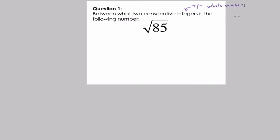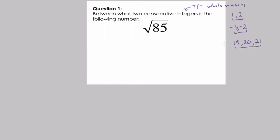Some examples of consecutive integers would be numbers like one and two. These two numbers are literally right next to each other and there are no integers between them. Negative three and negative two are also consecutive integers. And we can go higher — nineteen, twenty, twenty-one, and so forth. Consecutive integers just mean sequences of integers where there are no other integers between them — they're right next to each other.